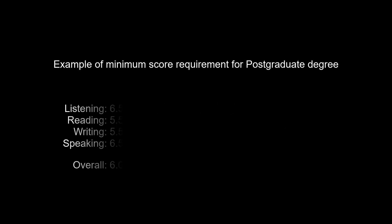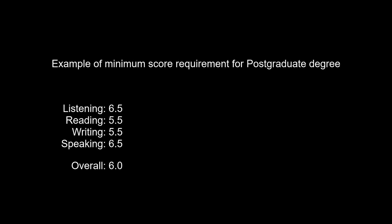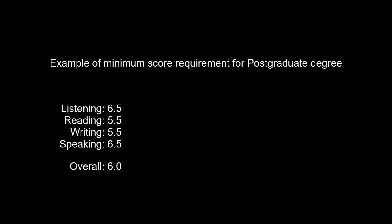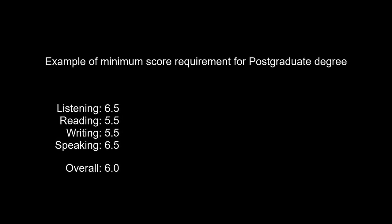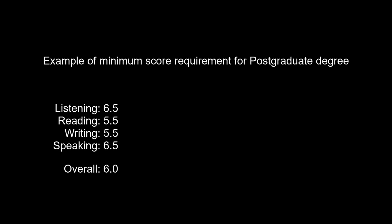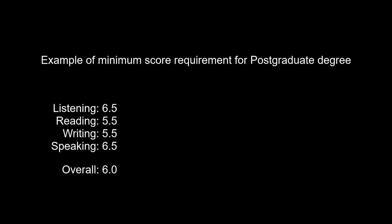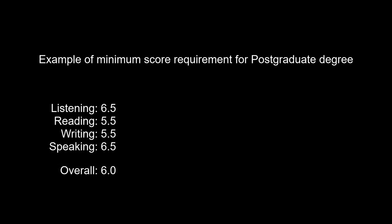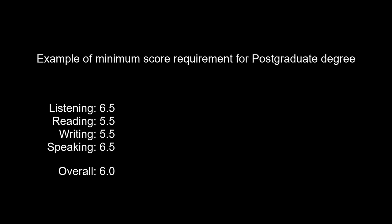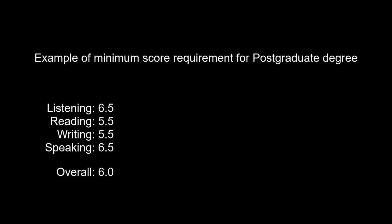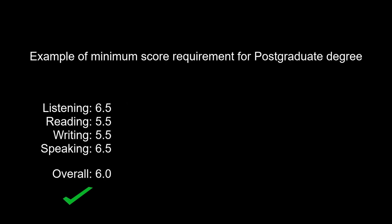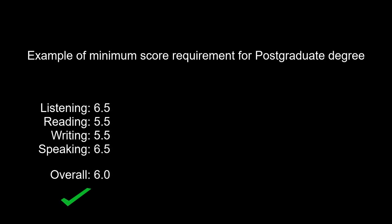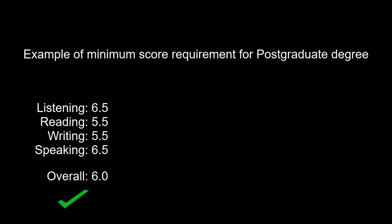Let's have a look at an example. Let's say that for a master's degree course, you score 6.5 in listening, 5.5 in reading, 5.5 in writing, and 6.5 in speaking. Your overall score is 6.0. In this case, you meet both the criteria: the overall minimum score of 6 and each band score of at least 5.5.